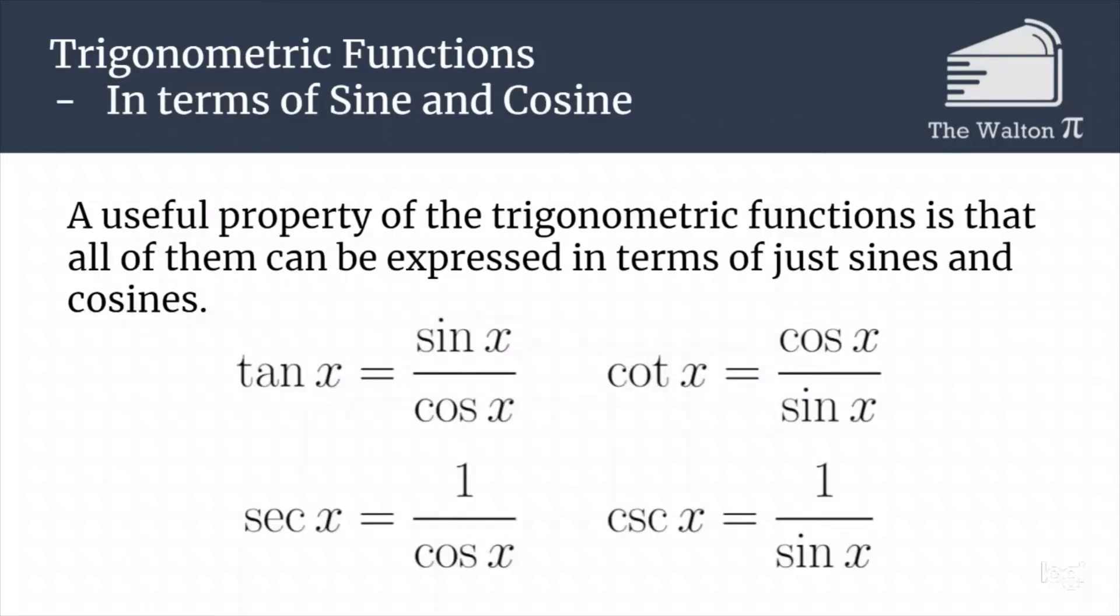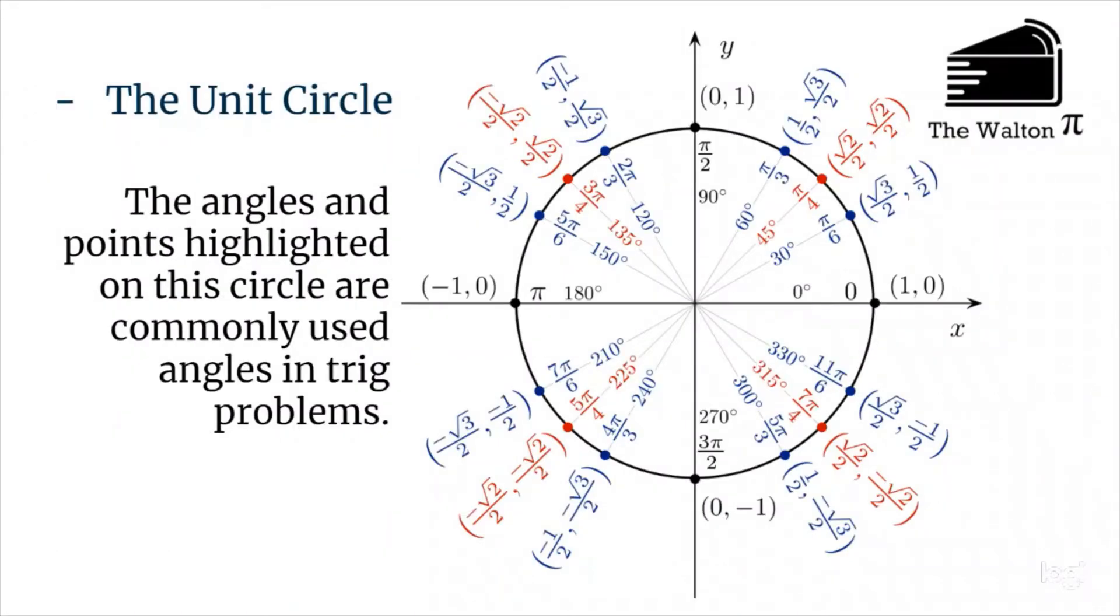A useful property of functions is that all of them can be represented in terms of just sine and cosine. If you can know the sine and cosine values, then you can know that tangent is sine over cosine, cotangent is cosine over sine, secant is one over cosine, and cosecant is one over sine. If we know the sine and cosine values, then we can know everything else.